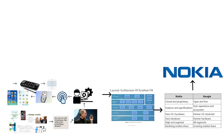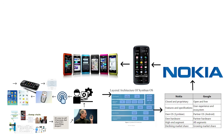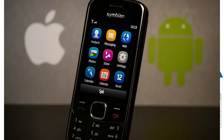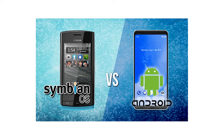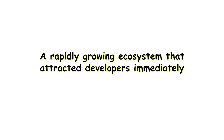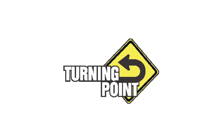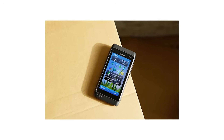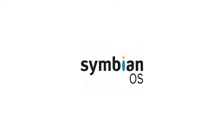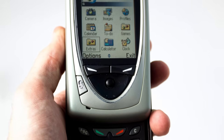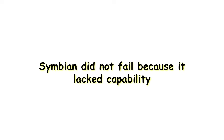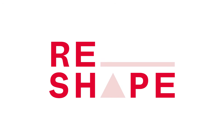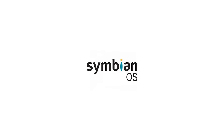Nokia attempted to modernize Symbian multiple times. They introduced Symbian S60 Touch, then Symbian Anna, and finally Symbian Belle, each adding more modern interface components. But the core architecture still reflected a world where phones had tiny displays, limited RAM, and button-based navigation. Meanwhile, Android offered a unified development model, consistent hardware assumptions, and a rapidly growing ecosystem that attracted developers immediately. The final turning point came when Nokia announced a partnership with Microsoft to adopt Windows Phone as its primary platform. Symbian was placed into long-term support, and its developer ecosystem collapsed almost overnight. The operating system officially reached end of life in 2014, becoming a historical footnote despite once powering hundreds of millions of devices. Symbian did not fail because it lacked capability — it failed because it was engineered for the constraints of the early 2000s and could not be reshaped quickly enough for the touchscreen era. When the world changed, Symbian stayed optimized for a problem that no longer existed.